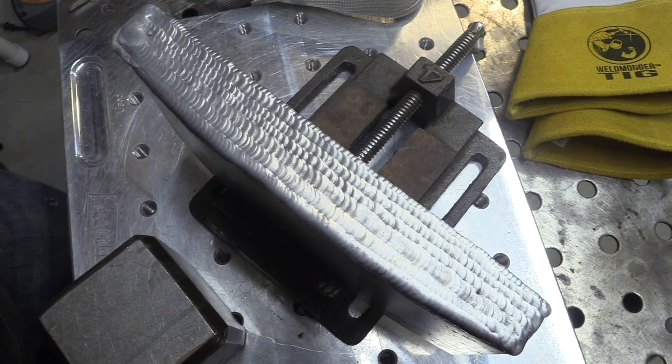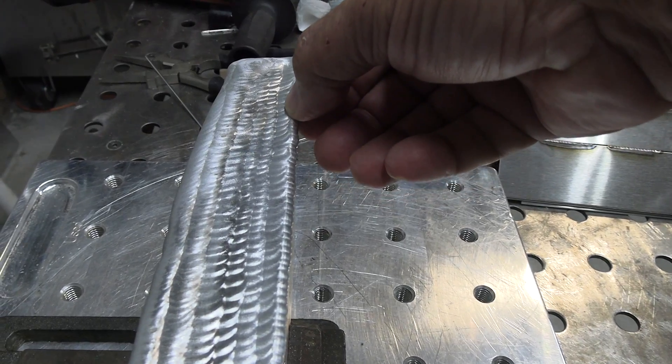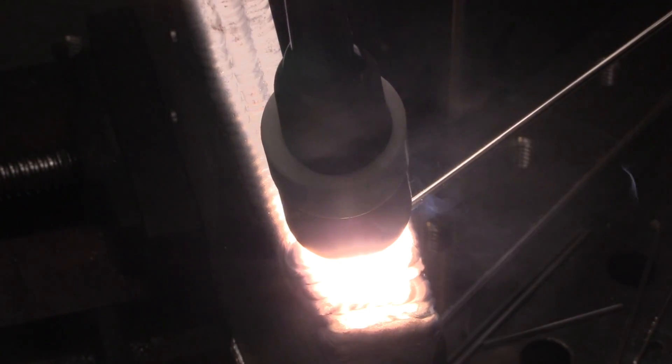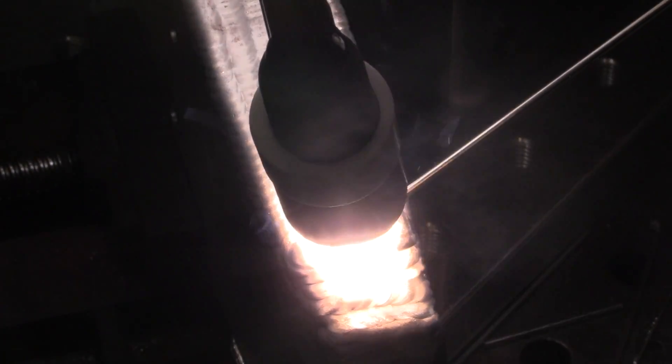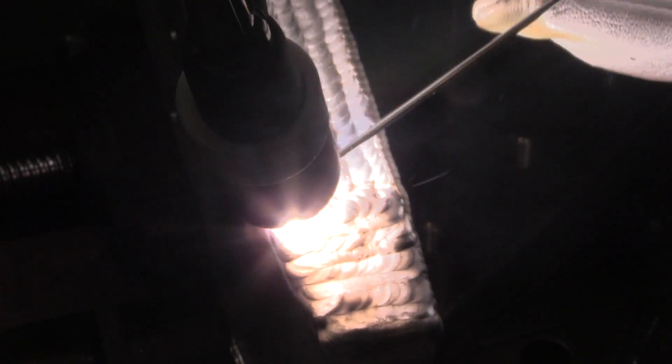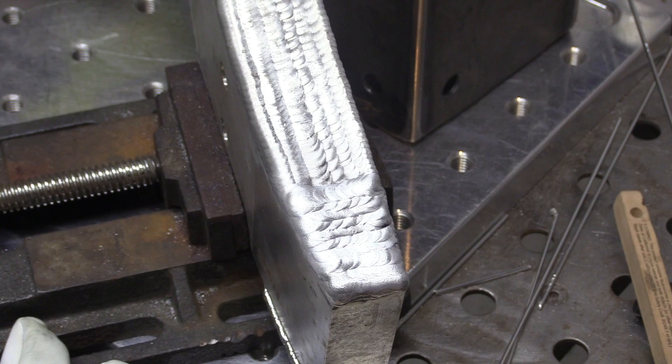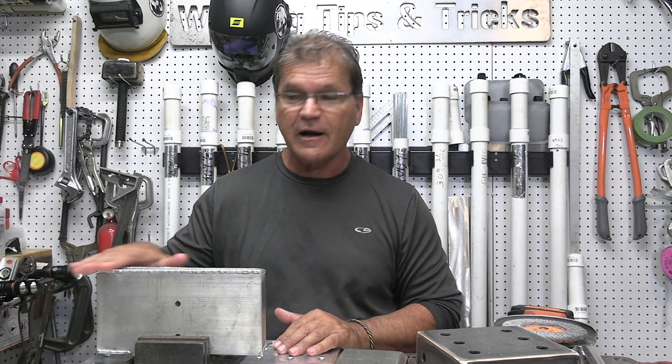All right, that looks pretty decent, except you can see there are some little low places here and there. And so one way to fix that would be to just run some beads sort of sideways, in which case I wouldn't be worrying about packing a whole lot of filler in there. I'm just kind of doing a smoothing pass. Good rule of thumb when you're building up something to be machined is, when you think you've got enough on there, put a little bit more.